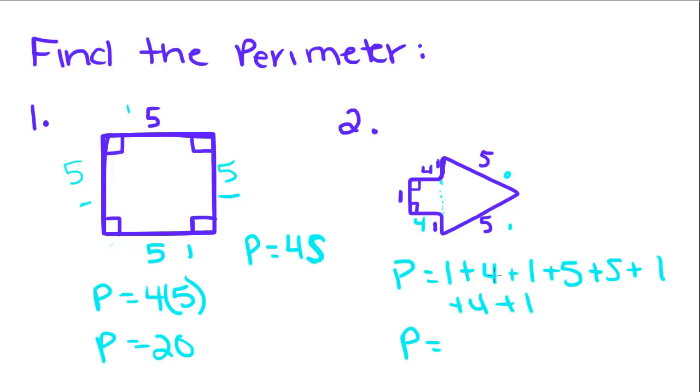1 plus 4 is 5, plus 1 is 6, plus 5 is 11, plus 5 is 16, plus 1 is 17, plus 4 is 21, plus 1 is 22. So, the perimeter of this shape is 22.